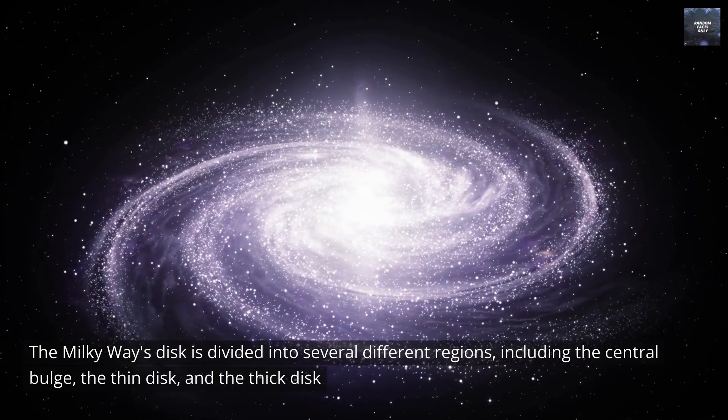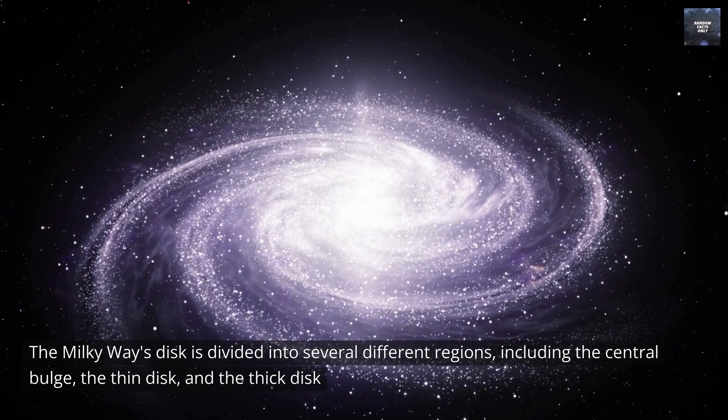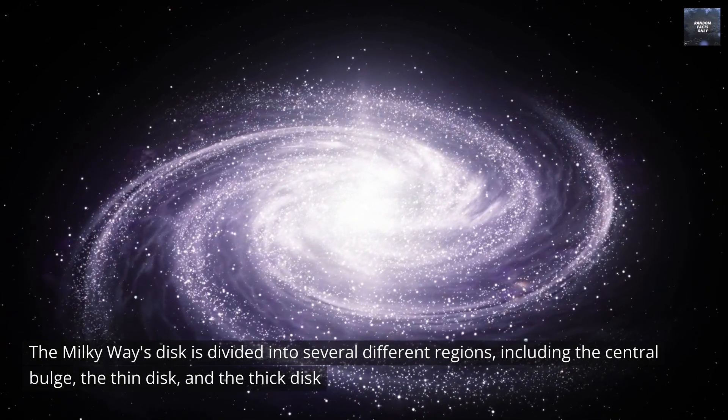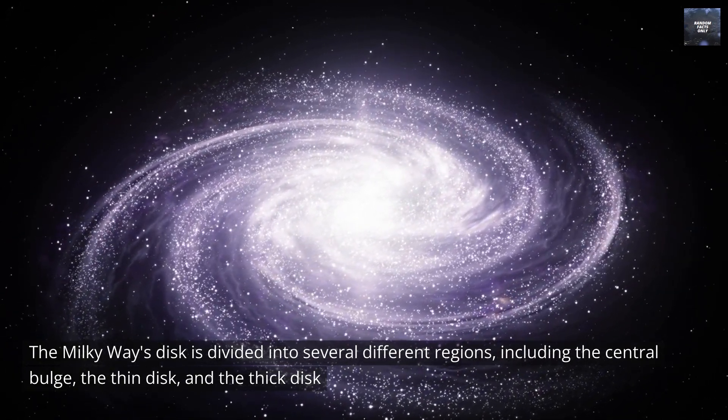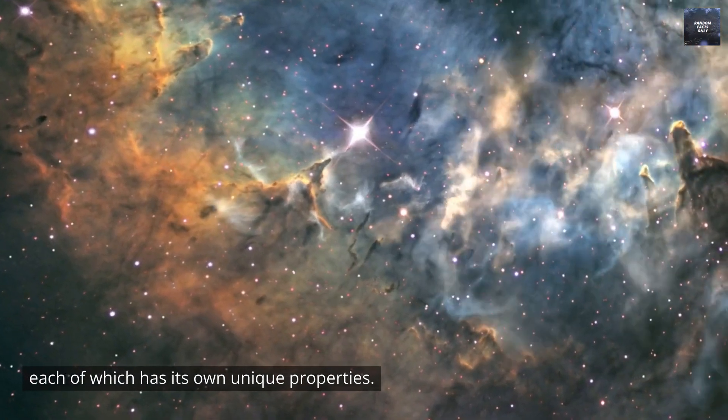The Milky Way's disk is divided into several different regions, including the central bulge, the thin disk, and the thick disk, each of which has its own unique properties.